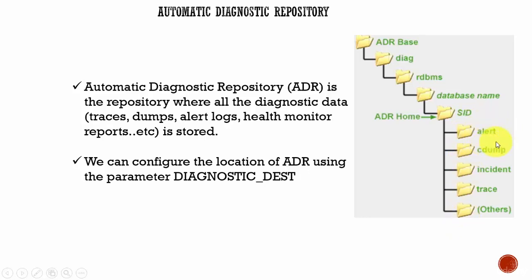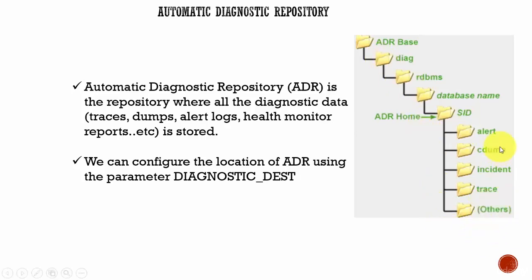An alert folder to store all your alert logs. CDump, which means core dump, is used to store all the core dump files. Incident — if there is a severe incident, it is recorded in the incident files. All the trace data is stored in the trace files. There are also other folders like HM, which is used to store the health monitor reports. This structure is uniform across all the instances in the Oracle database.